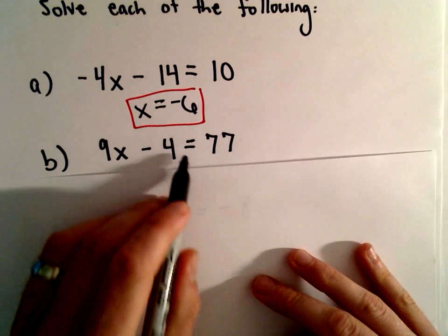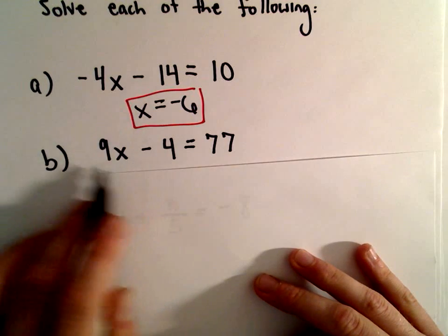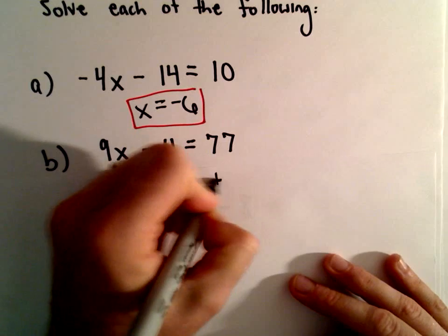So we've got 9x minus 4 equals 77. Again, to get the term involving x isolated, I'm going to start off by adding 4 to both sides.